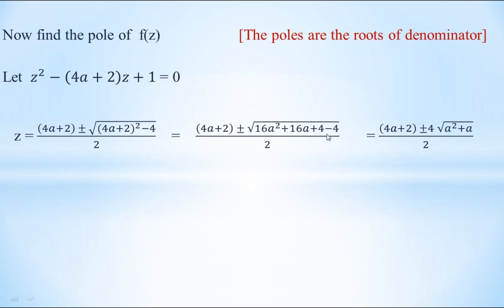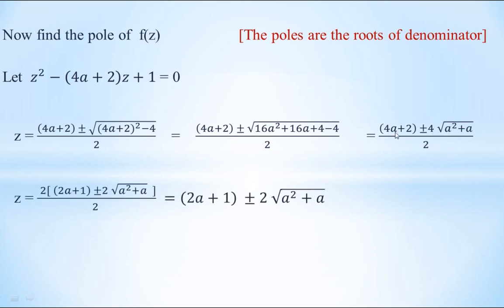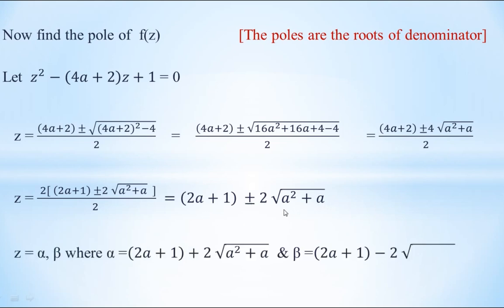The −4 and +4 cancel. In the remaining terms, 16 is common inside the root, giving √(16(a² + a)) = 4√(a² + a). So z = [(4a+2) ± 4√(a² + a)] / 2. Since 2 is common in the numerator and cancels with the denominator, we get z = (2a+1) ± 2√(a² + a). The first root is α = 2a+1 + 2√(a²+a) and the second root is β = 2a+1 − 2√(a²+a).